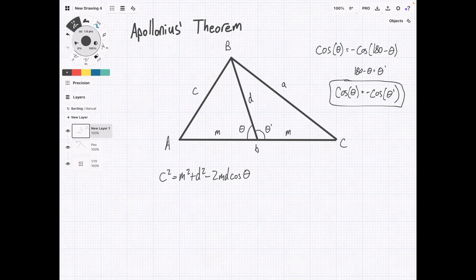Now we're going to use the law of cosines to find side length a. It's going to be the same sort of thing. a squared equals m squared plus d squared minus 2md cosine of, this time, theta prime.